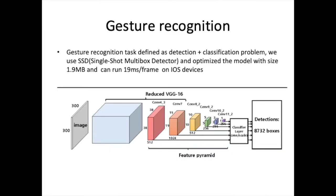Gesture recognition defines a detection plus classification problem. We use SSD, single-shot multi-box detector, and optimized the model to a size of 1.9 MB, which can run at 90 frames per second on iOS devices.